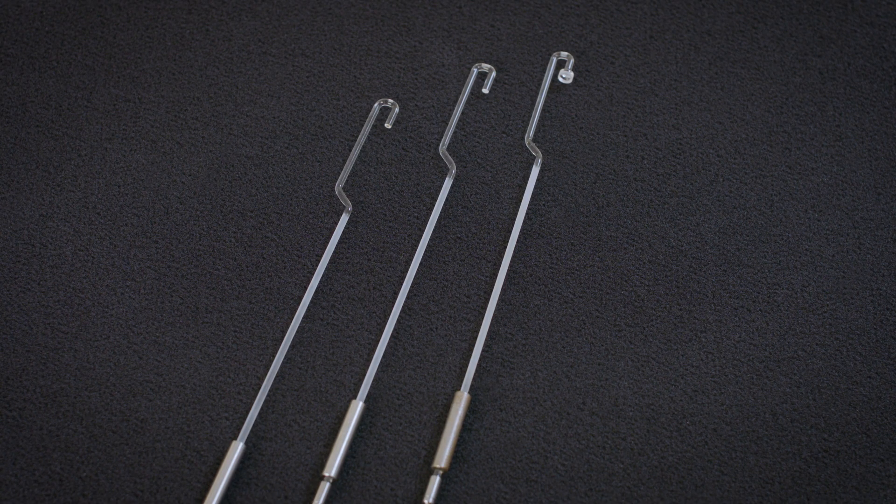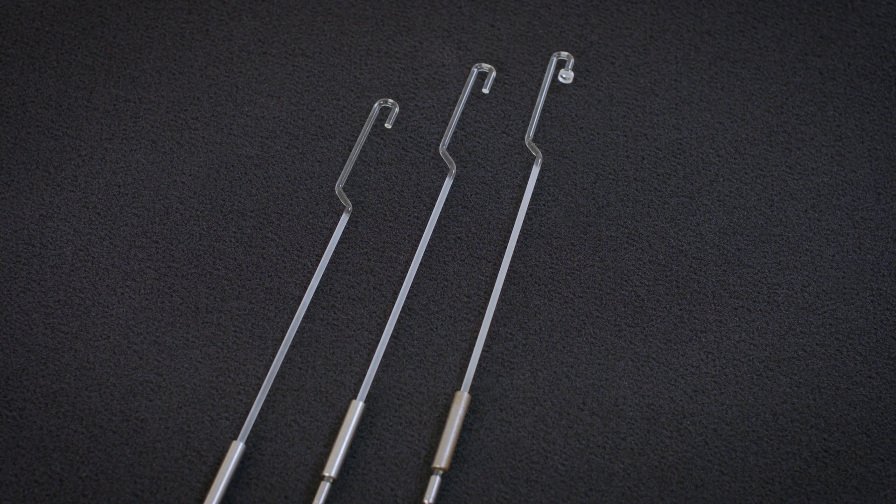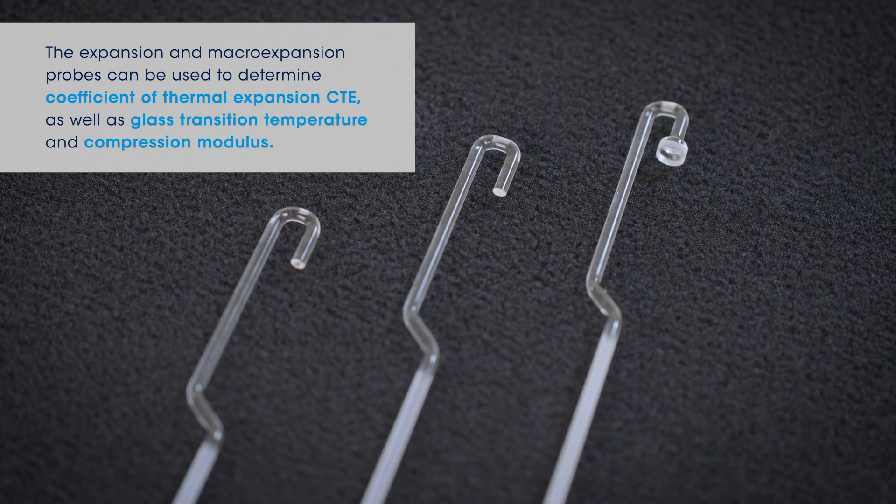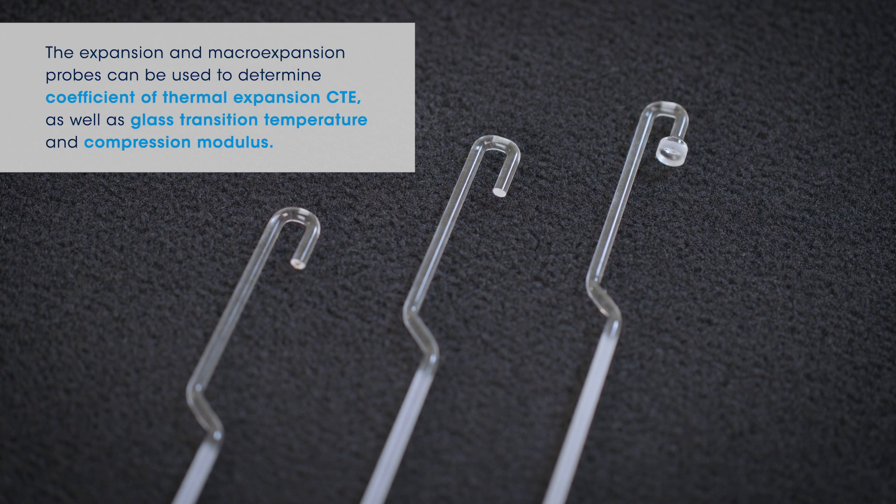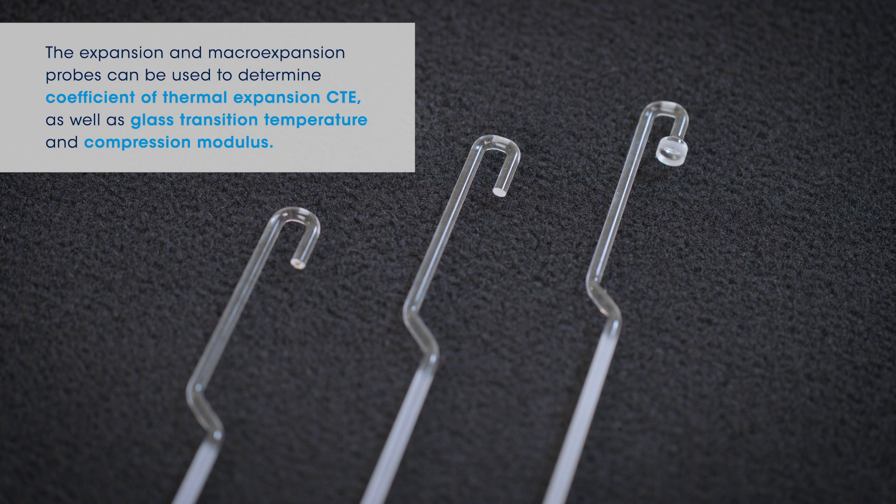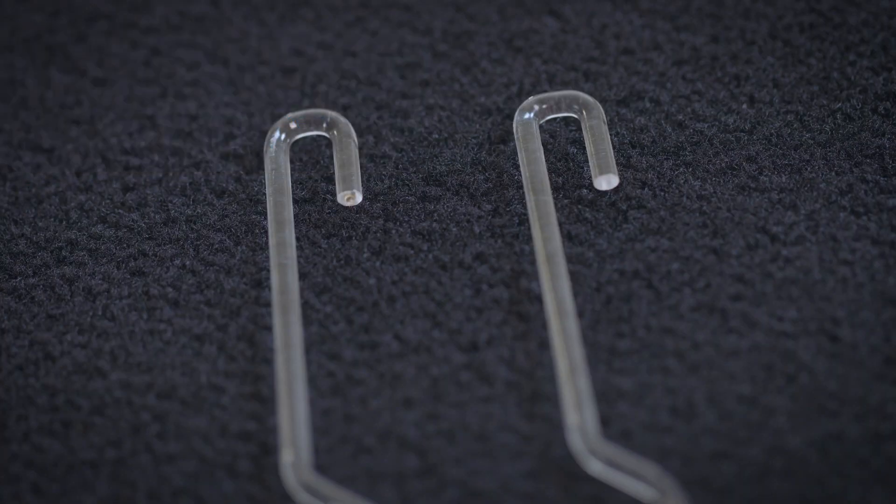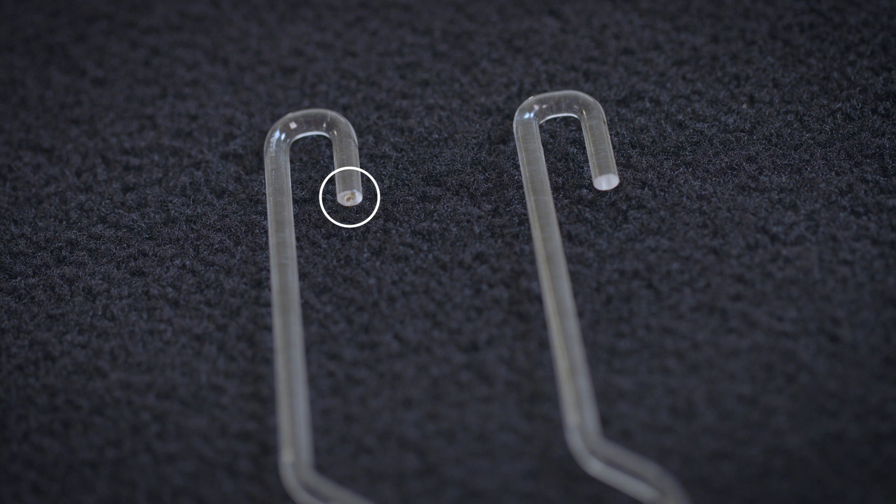The type of probe you choose depends upon the type of testing information you need. The expansion and macro-expansion probes can be used to determine coefficient of thermal expansion as well as glass transition temperature and compression modulus. The penetration probe has a small tip that sinks into the material as it is heated. This probe is used to determine glass transition, softening, and melting points.